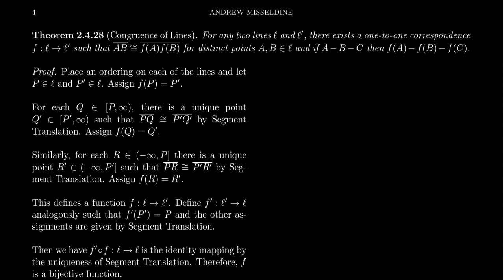In this video, I want to prove the so-called congruence of lines theorem in a congruence geometry, which will essentially give us the statement that any two lines in a congruence geometry are the same — that is, there's a congruence between them. How does one make that explicit? What do we really mean that two lines are congruent? We can talk about line segments, but what does it mean for two lines to be congruent?